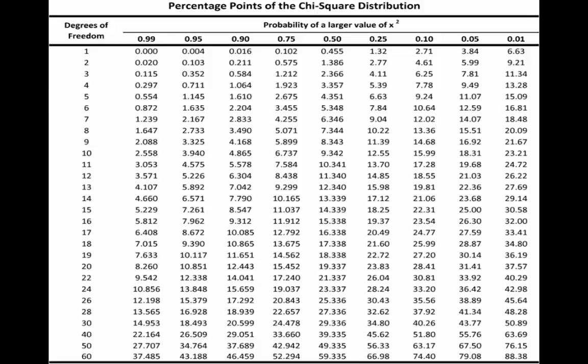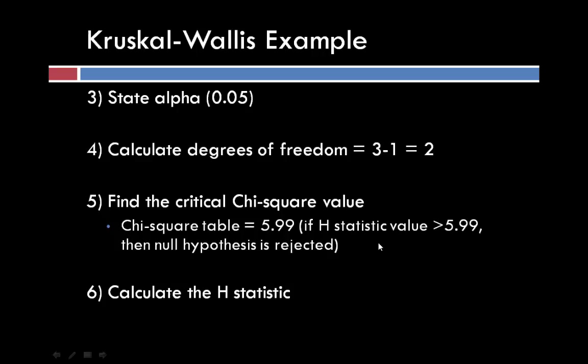Here is our chi-square table. On the y-axis we have our degrees of freedom, and along the top we have our significance level. We are using a significance level of 0.05, and we have two degrees of freedom, so our critical chi-square value is 5.99. If our H-statistic value is greater than 5.99, then we can reject our null hypothesis.